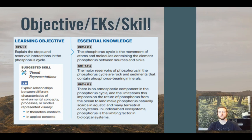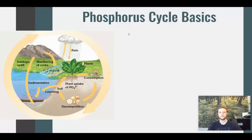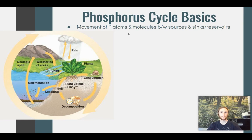Our objective today is to be able to explain the steps and reservoir interactions in the phosphorus cycle. The skill we'll practice at the end of the video is explaining relationships between characteristics of an environmental concept in a visual model setting. So just like in the carbon cycle and the nitrogen cycle, the phosphorus cycle is the movement of phosphorus-containing elements between sources and sinks.